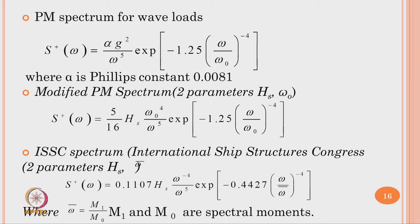Alternatively, spectra can be used to designate wave loads. The famous spectrum S(ω) is given with an expression where α (Phillips constant) has a value of 0.0081. Subsequently, Pierson-Moskowitz proposed a modified spectrum with two parameters h_s and ω̄, famously known as the ISSC spectrum, where ω̄ is the ratio m₁/m₀, and m₁, m₀ are spectral moments of the spectrum.